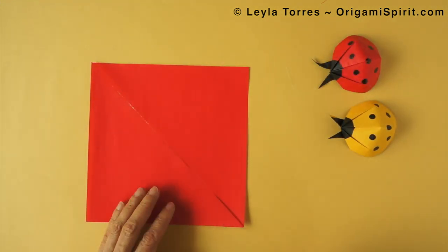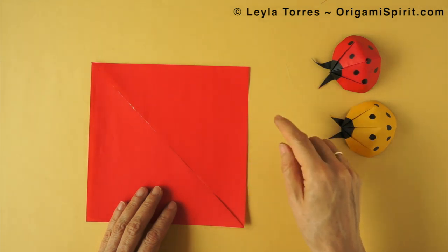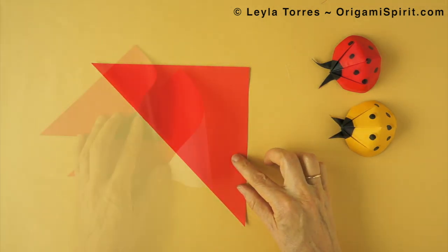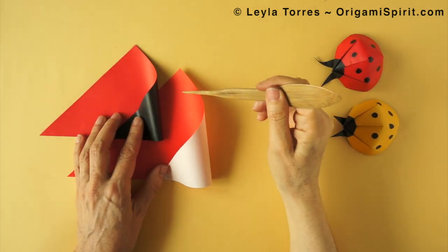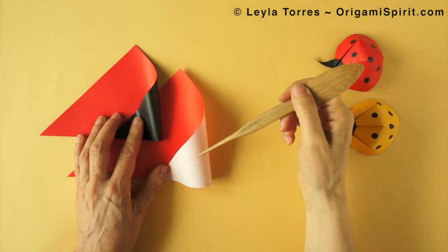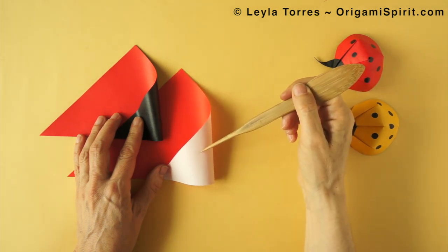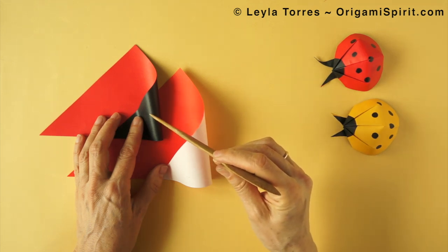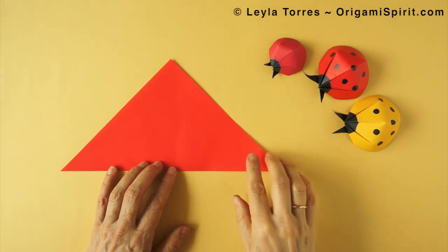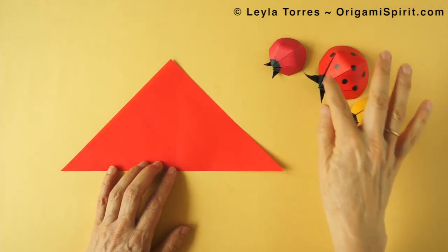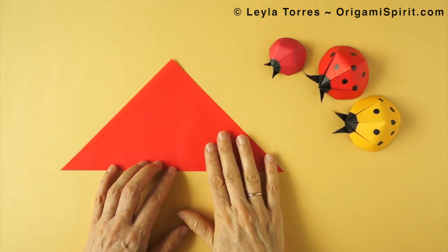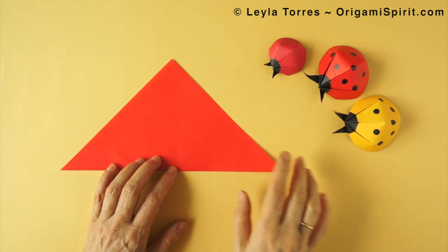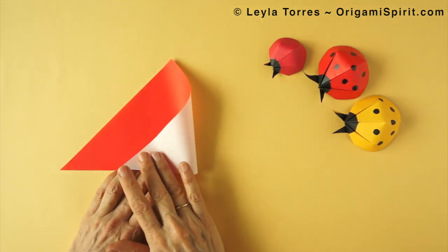For the demonstration, I will be using a bigger piece of paper. I have paper red on one side and white on the other side for the demonstration. The white corresponds to the black in this case. We begin with the main color of the body facing up. In this case, it will be red. The antennae will be white.